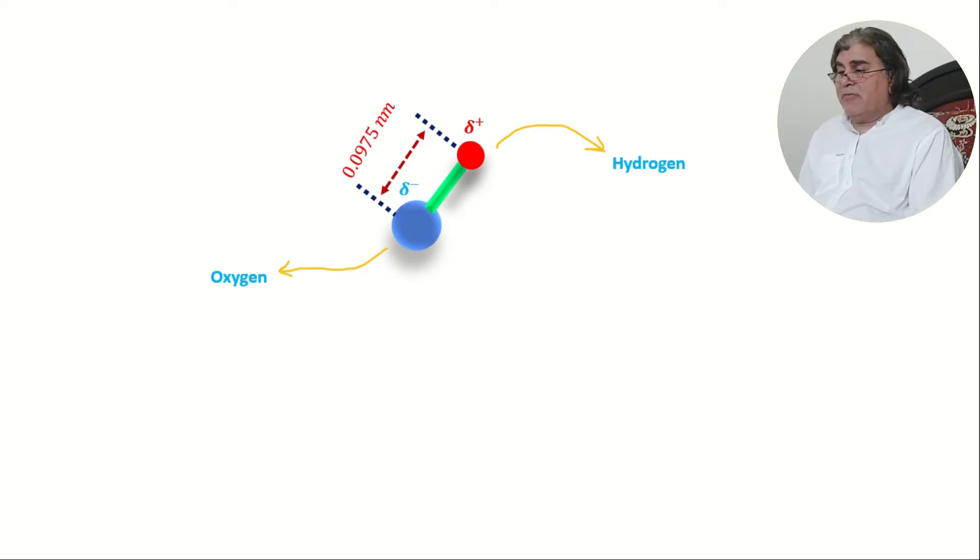For completing electronic configuration, that is having eight electrons in its outermost shell, the oxygen atom needs one more covalent bond. If we bring another hydrogen atom to the same distance as the previous one, another covalent bond is formed between the pair of electrons of oxygen and hydrogen atom.